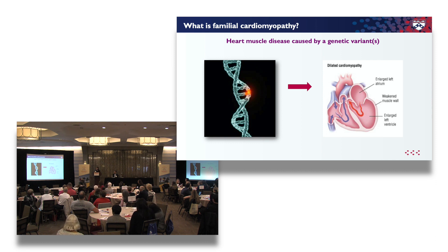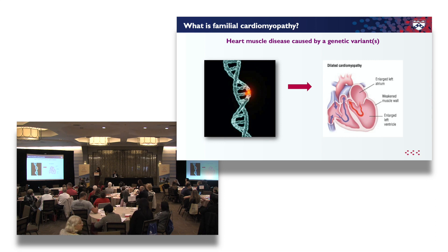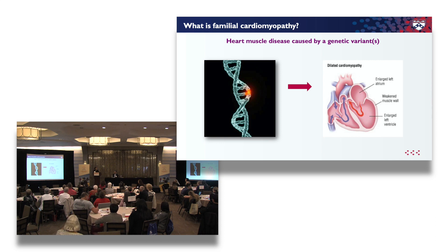So what is a familial cardiomyopathy or heart muscle disease? It's when one change in your DNA — one single change — can sometimes lead to an abnormality in the way your heart is structured and the way it functions. Believe it or not, just that one misspelling or change in the blueprint can result in a heart that looks and functions differently, and when it's passed on from generation to generation we call it a familial cardiomyopathy.